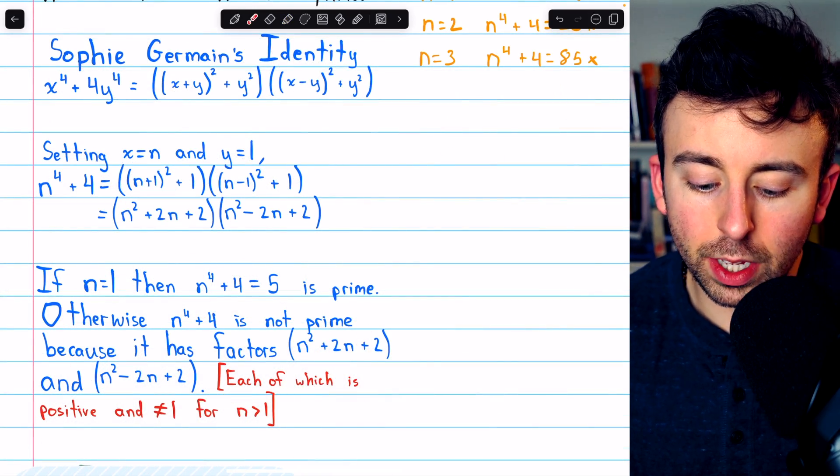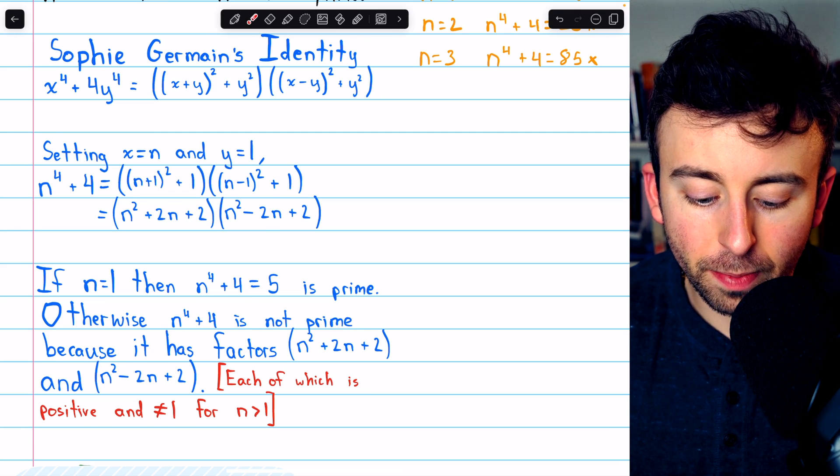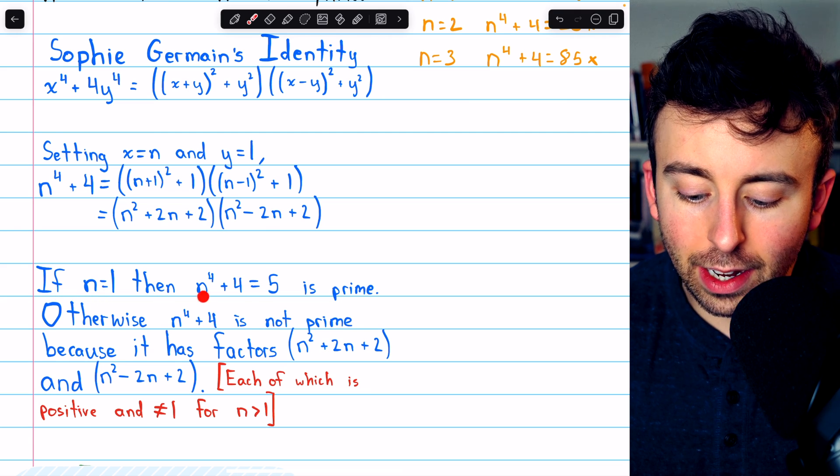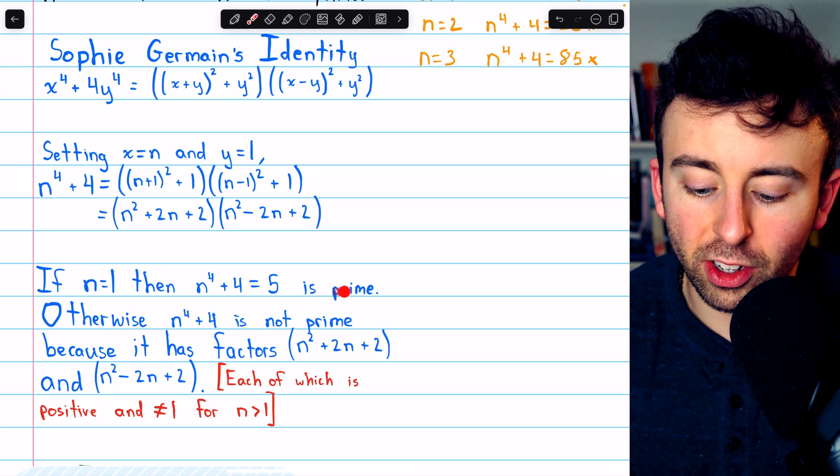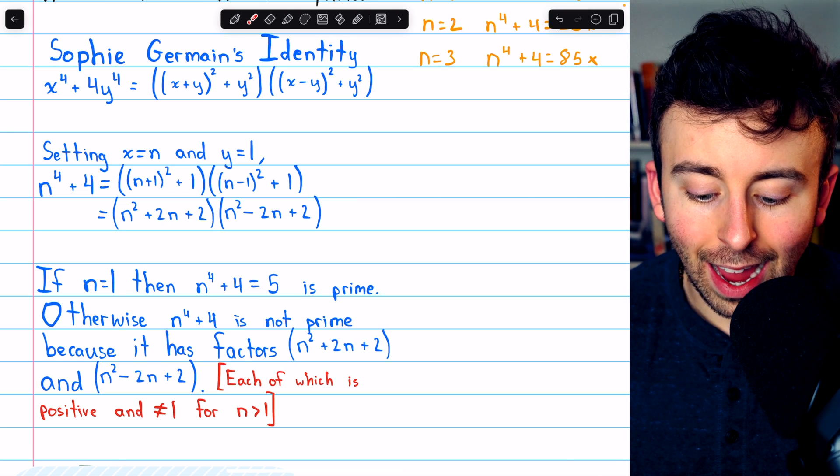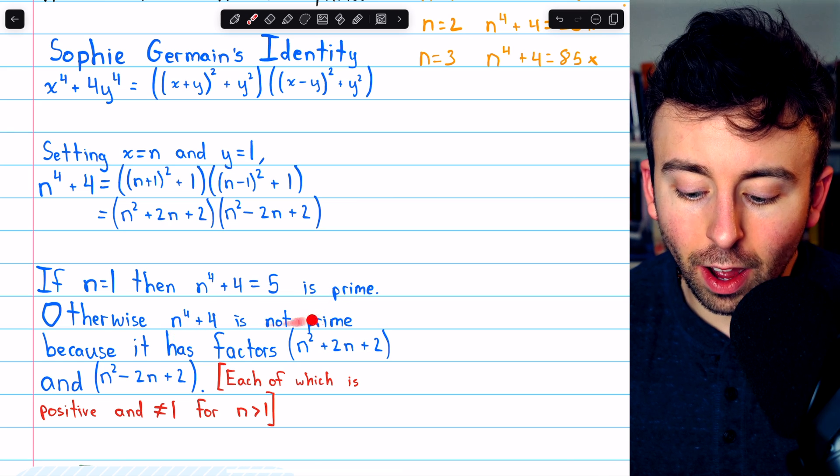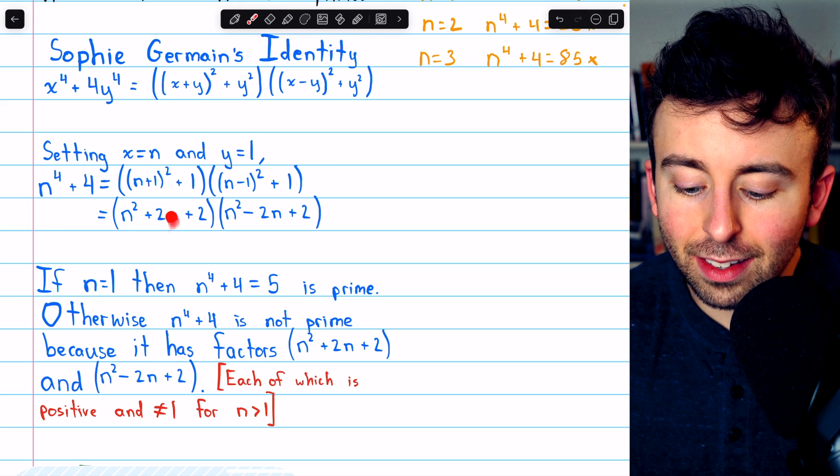And here that explanation is with a little bit more detail. If n equals 1, then n to the 4 plus 4 is 5, which is prime. Otherwise, n to the 4 plus 4 clearly is not prime, because it has these two factors.